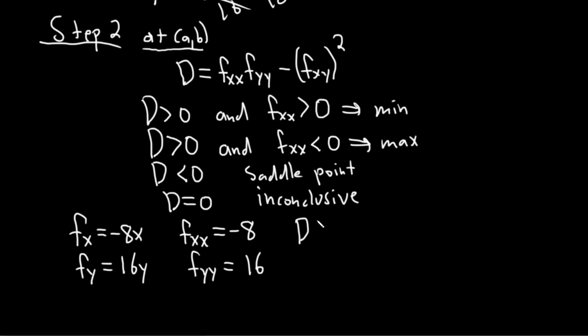So now we'll compute big D. So big D and I'm going to go ahead and put the 0 0 here to indicate that we're evaluating it there. Even though it's not going to come into play. Oh we still need fxy rather. Well if we take the partial of fx with respect to y we just get 0.